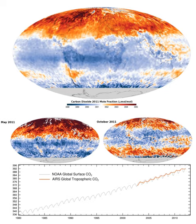Concentrations reach a peak in May as the Northern Hemisphere spring green-up begins, and decline to a minimum in October, near the end of the growing season. Since global warming is attributed to increasing atmospheric concentrations of greenhouse gases such as CO2, scientists closely monitor atmospheric CO2 concentrations and their impact on the present-day biosphere.